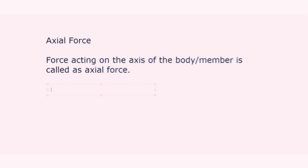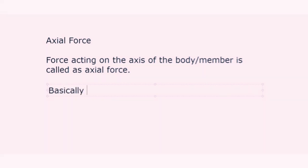Axial force is nothing but the force acting on the axis of the member or body. It can be on the x-axis, y-axis, or z-axis. If the force is acting on the centroid, it is called a concentric force, and if it is acting at some distance, it is called an eccentric force.